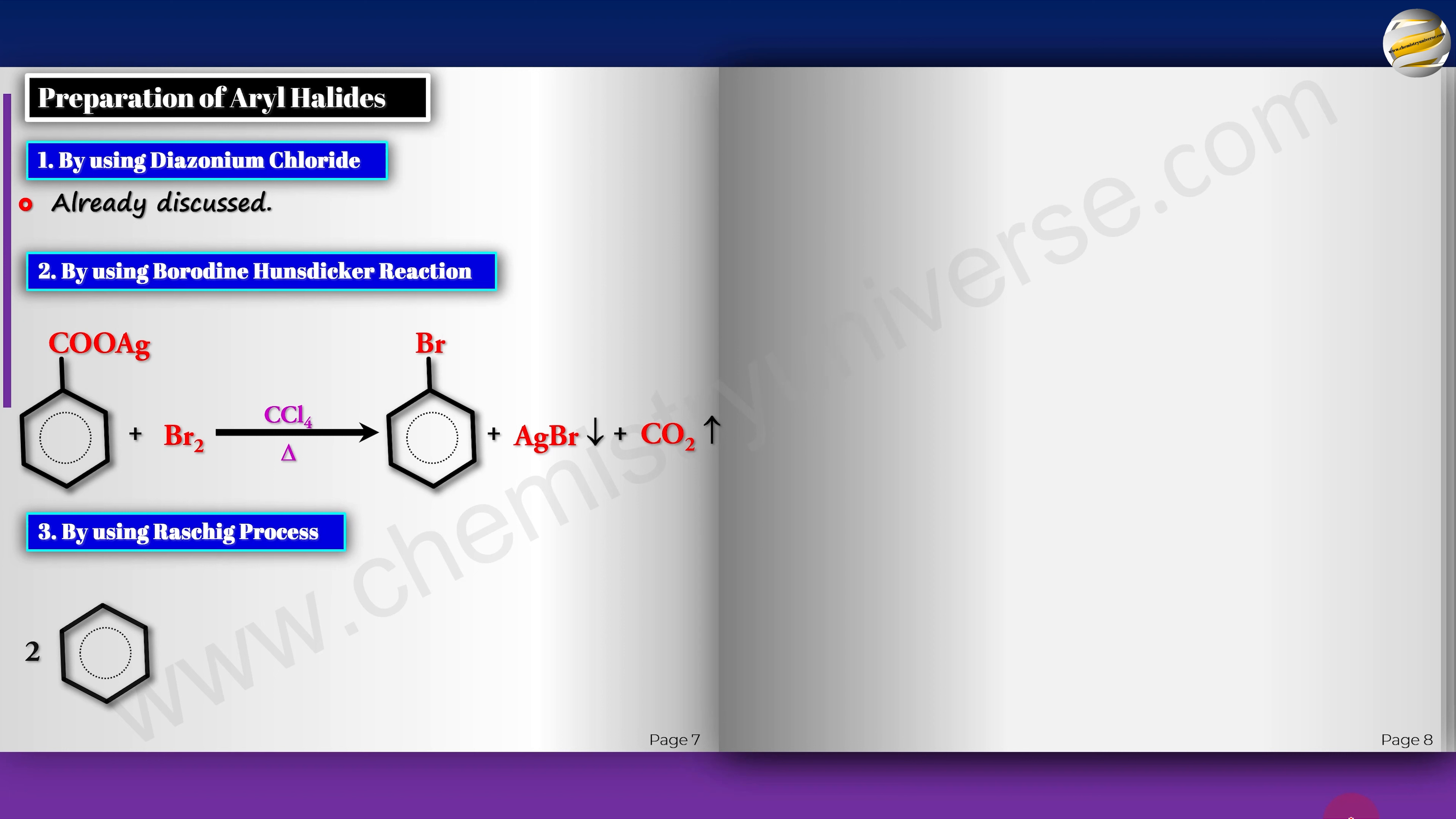Another important reaction is the Raschig process. You take 2 mol of benzene and correspondingly 2 mol of HCl, then you take O2. In the presence of Cu2Cl2 and heat, you will get the chlorobenzene and water. There's no need for you to figure out the mechanism for this.